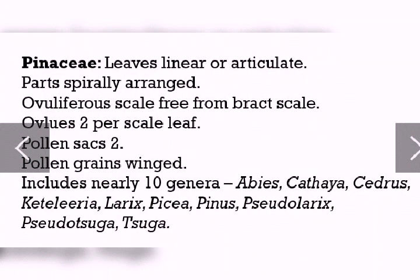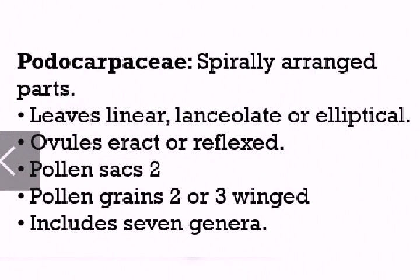Pinaceae: special needle-like leaves which are linear and spirally arranged. Ovuliferous scales are free from the bract scale. The microsporophyll contains two sporangia with winged pollen grains. Leaves are linear, lanceolate or elliptical and are spirally arranged. Ovules are erect or reflexed. Microsporophylls contain two pollen sacs with two or three winged pollen grains.